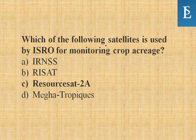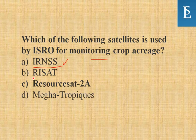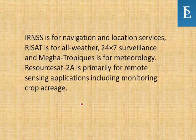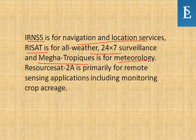Which of the following satellites is used by ISRO for monitoring crop acres? IRNSS is the Indian Regional Navigation Satellite System with seven satellites — that's for navigation and location services. RISAT is for all-weather 24x7 surveillance. Megha-Tropiques is for meteorology. RESOURCESAT-2A is primarily for remote sensing applications including monitoring crop acres. So the answer is RESOURCESAT-2A.